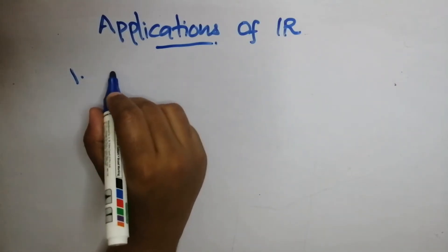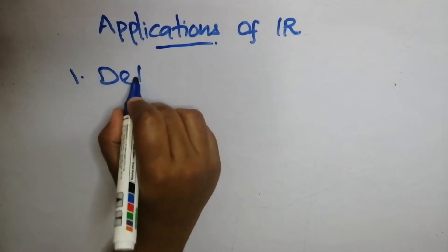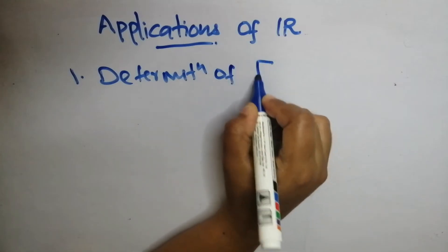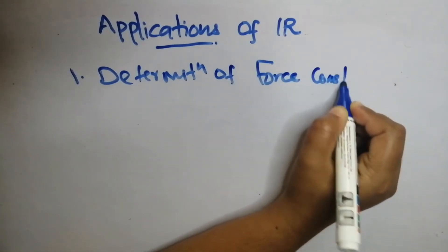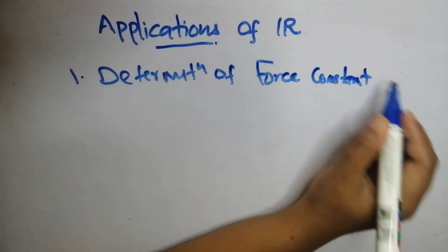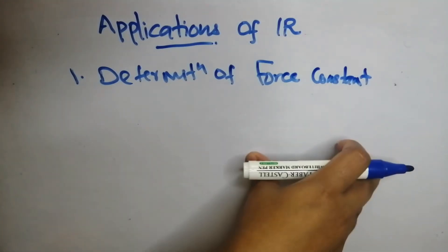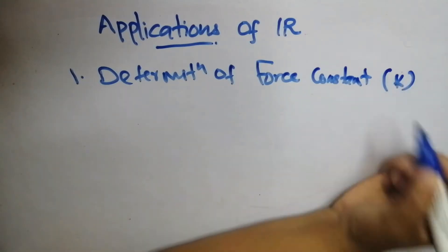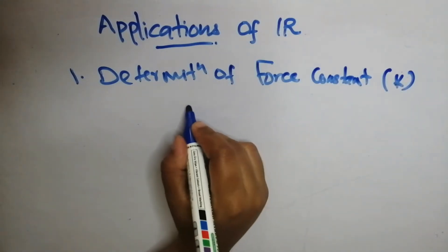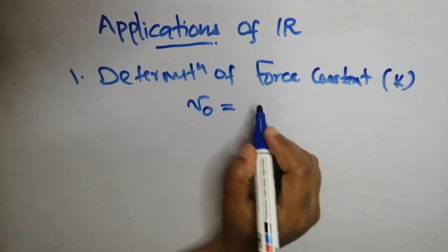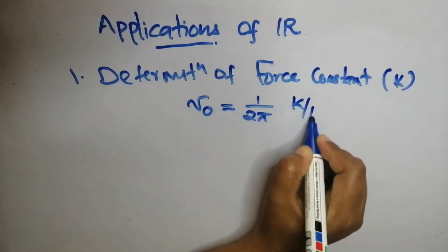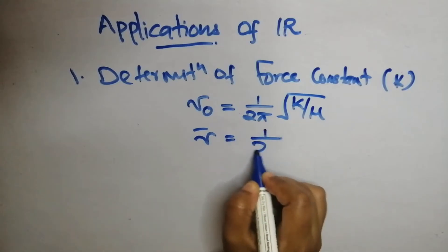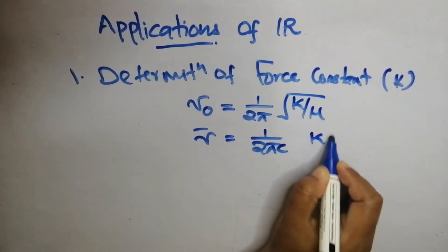The first application is the determination of force constant from the vibrational spectrum. The force constant K is derived from the equation: Nu-zero equals 1 by 2 pi root of k by mu. In wavenumber form, Nu-bar equals 1 by 2 pi c, root of k by mu.